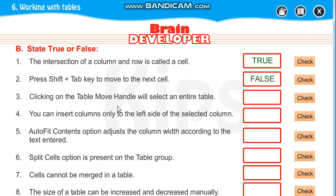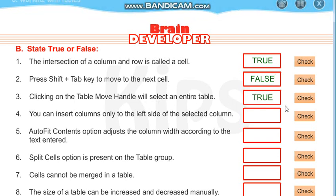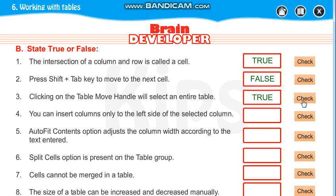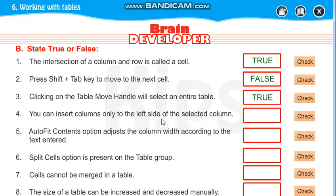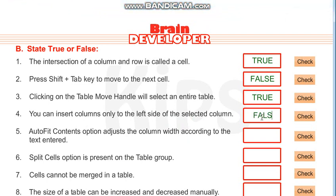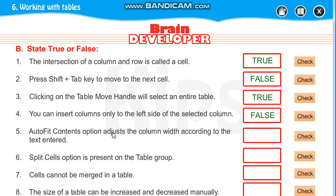Clicking on the table move handle will select the entire table — True. You can insert columns only to the left side of the selected column — False. Auto Fit Content option adjusts the column width according to the text entered — True.